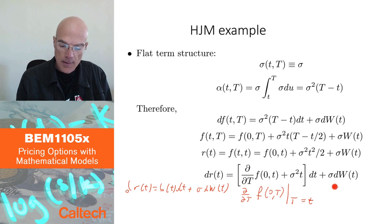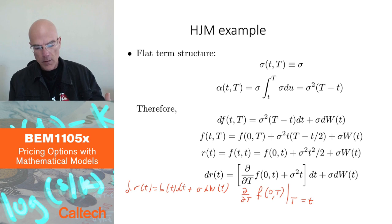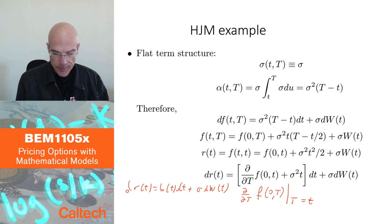So that's the advantage of Heath-Jarrow-Morton. It's naturally geared towards being calibrated to the bond price data through the forward rates, which, you know, whether observing forward rates or observing the smoothed out yield curve is equivalent. Which is very nice in theory. However, in practice, it's not so easy.